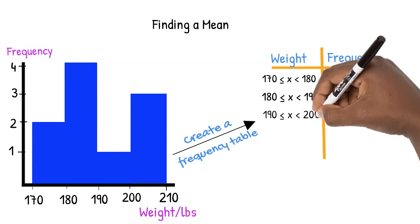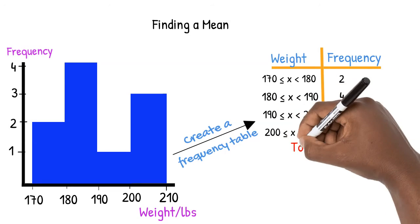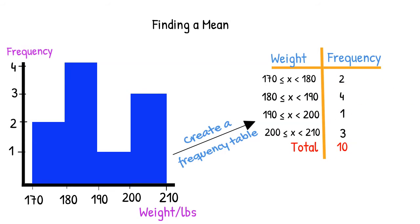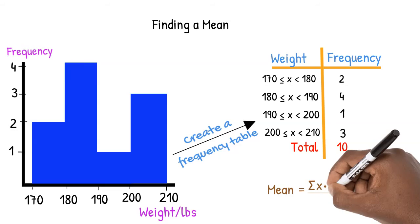Between 170 and 180 pounds we have two people. Between 180 and 190 pounds we have four people. There is one person in the next category and three people in the final category. Recall that once we have a table, we can find the mean by dividing the sum of the x times f values by the sum of the f values, which we did earlier in this video.